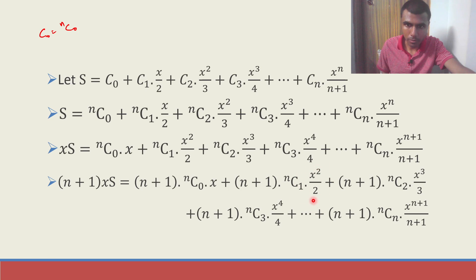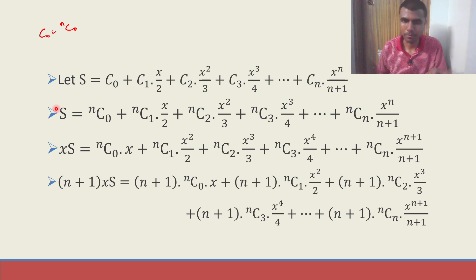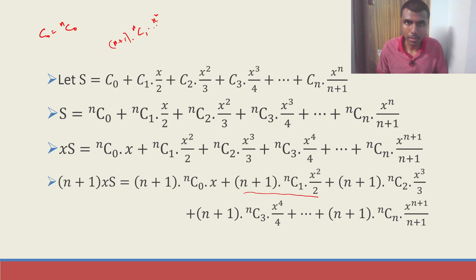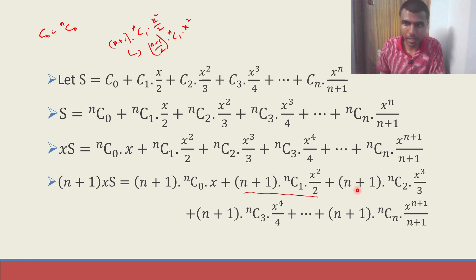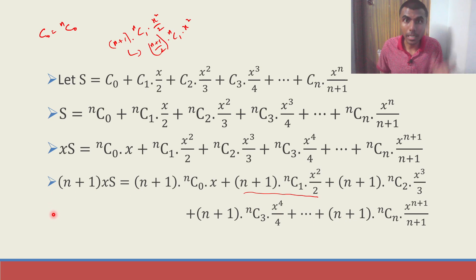Now listen carefully. Consider the term nC1 into x square by 2. This 'by 2' I am going to take here, so I can write it as (n+1) by 2 into nC1 into x square. Likewise the 'by 3' goes here as (n+1) by 3, the 'by 4' goes as (n+1) by 4, and the last term becomes (n+1) by (n+1) into nCn.